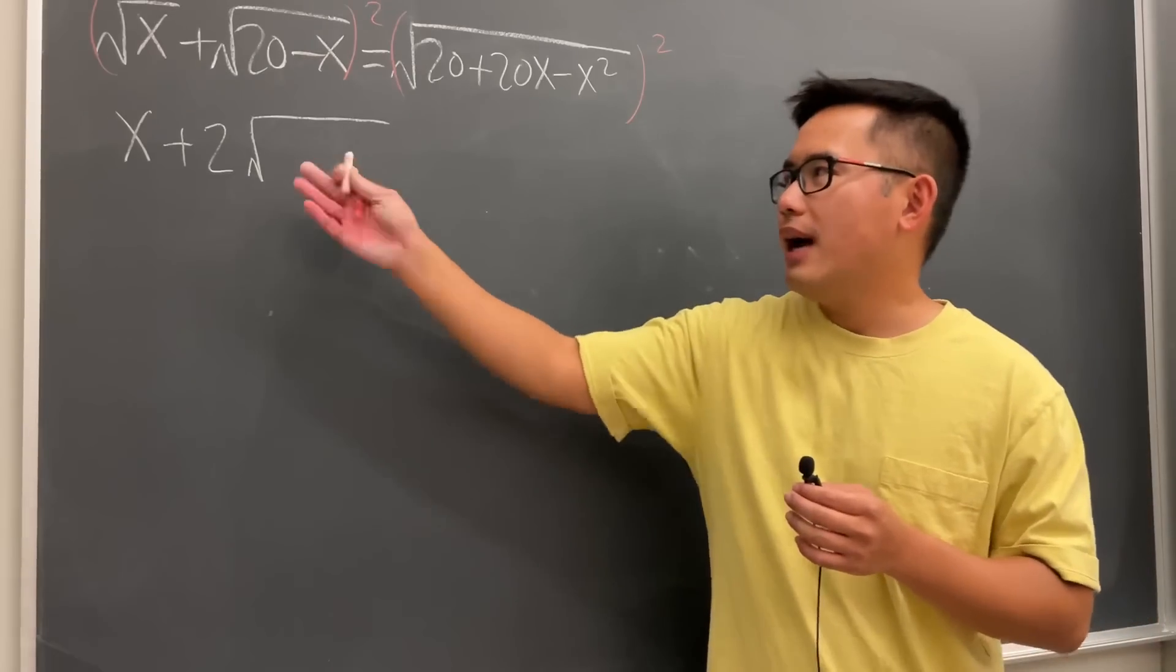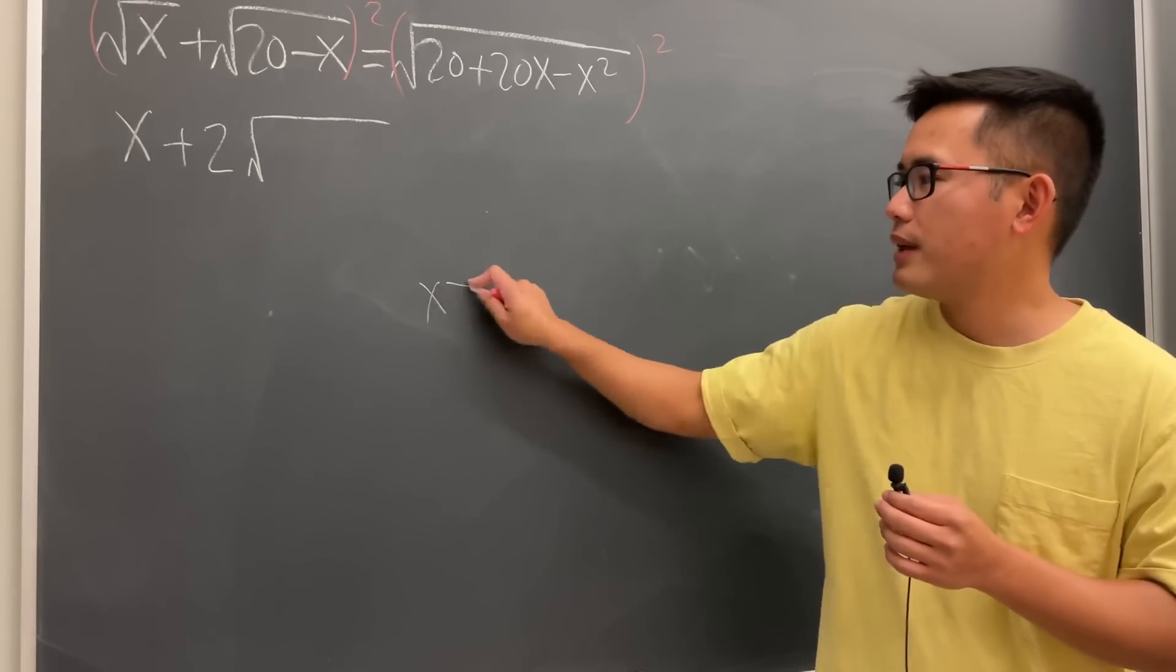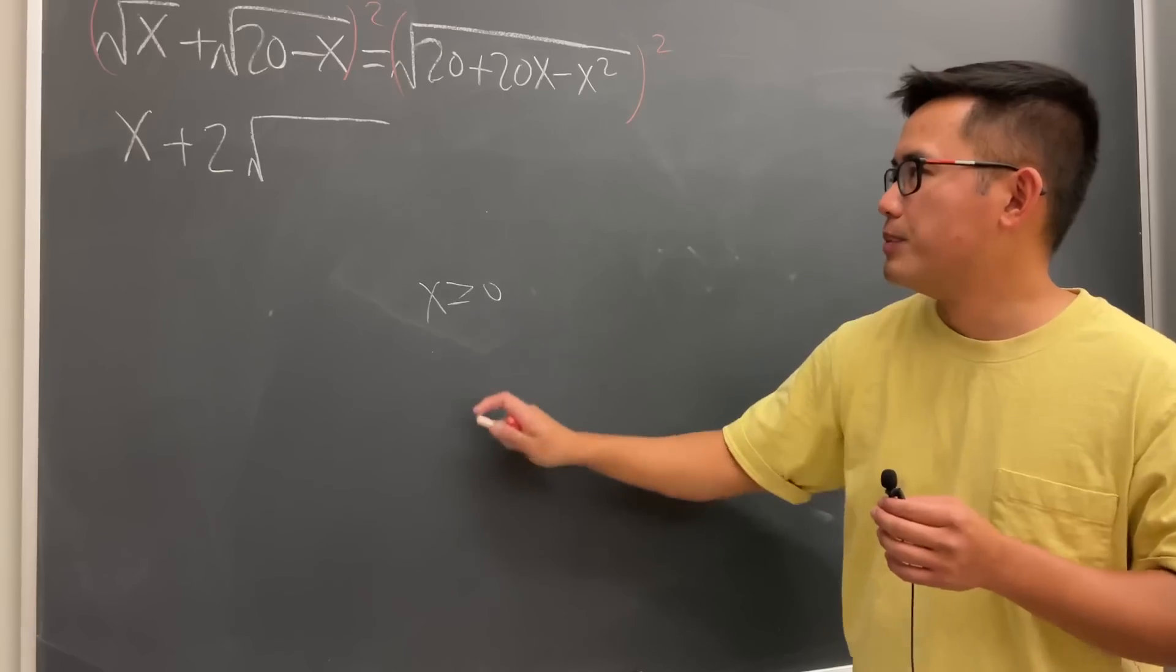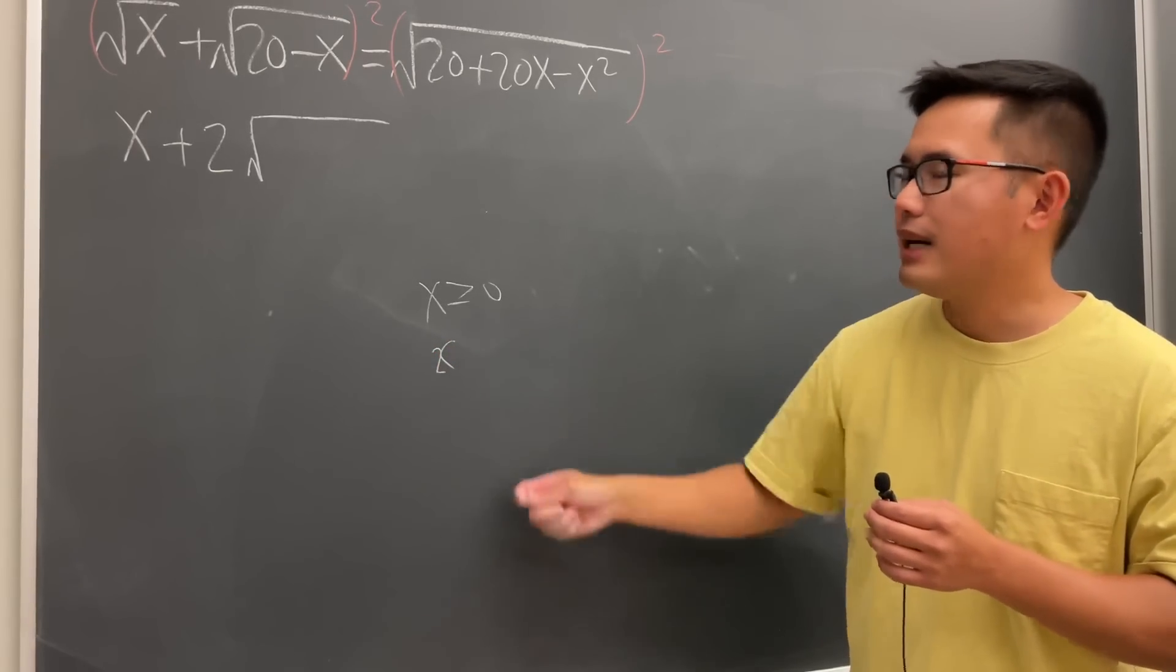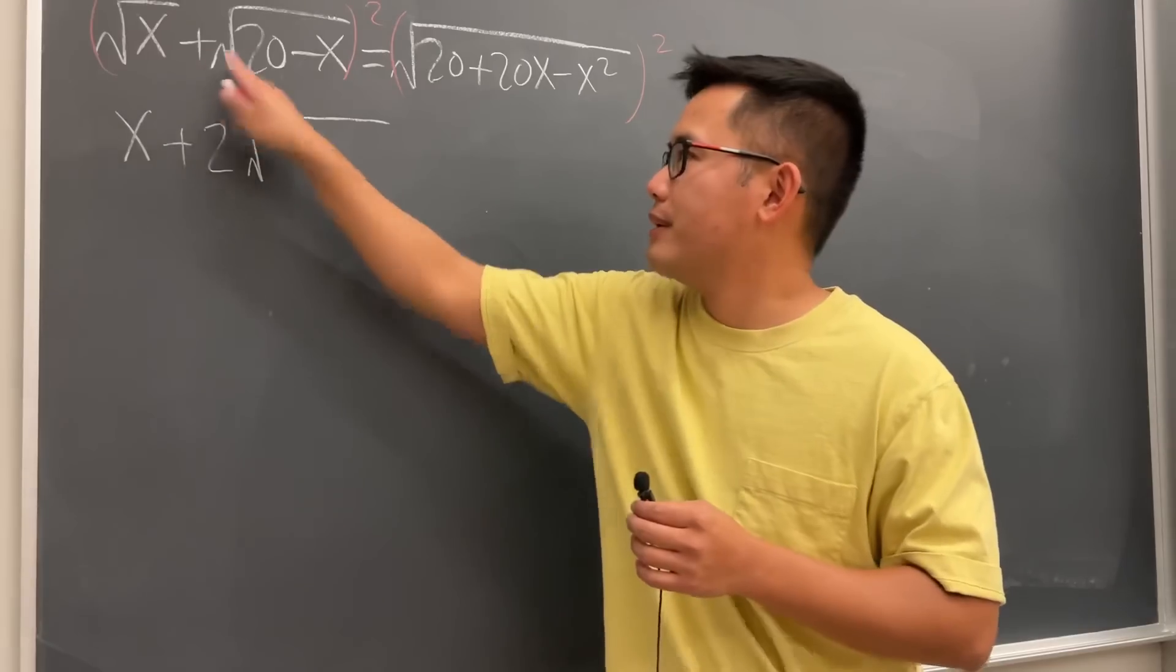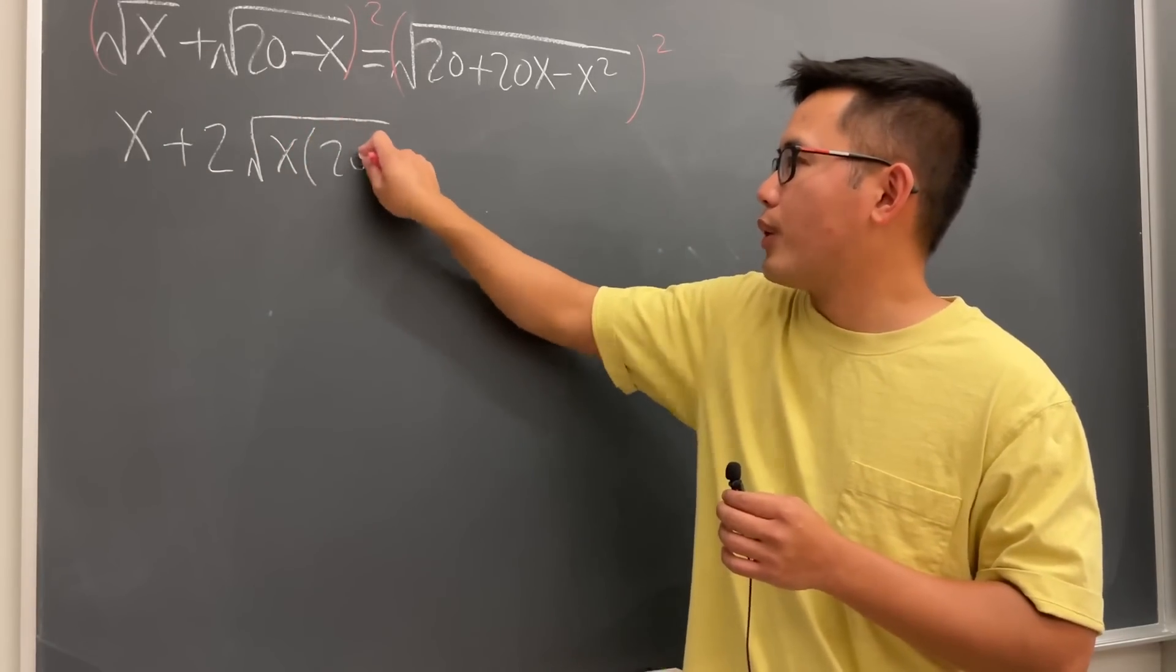Actually, no. Well, x has to be a good number. x has to be greater than or equal to 0 from here. And then from here, x has to be less than, yeah, binary though. I'm just going to multiply everybody inside. So this and that, x times 20 minus x.